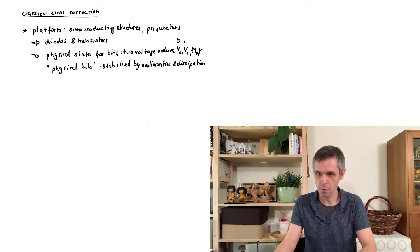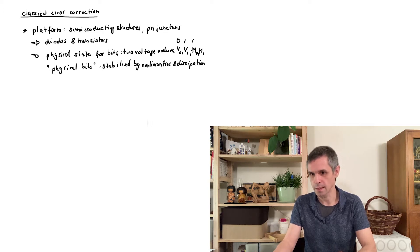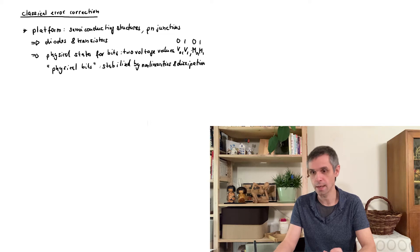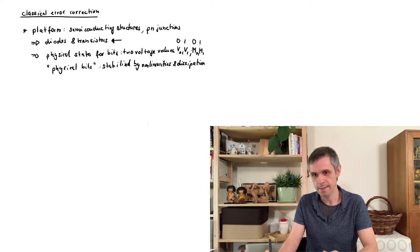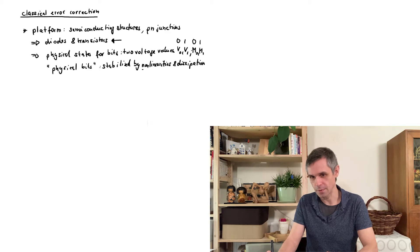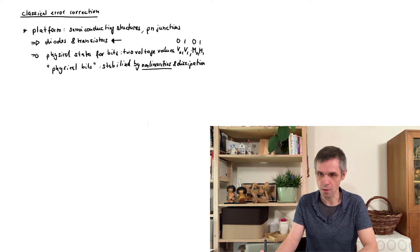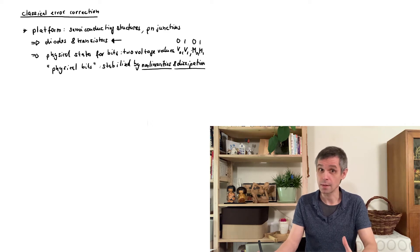And therefore for long-term memory you could make use of other physical states, such as states of magnetization in different domains on a hard drive. When you then want to process this information you can do this again most easily using electronic components such as again diodes and transistors. And these then again are very reliable because they make use of these non-linearities and dissipation. But nonetheless errors can occur.